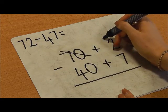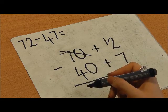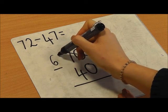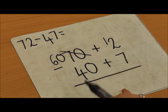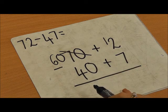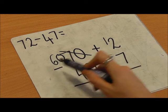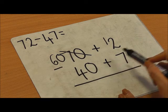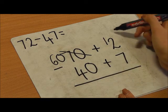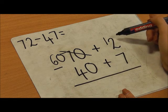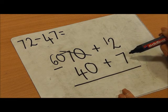10 for me. 10 less than 70 is 60. So now my calculation reads 60 add 12, take away 40 add 7. So now I'm going to go back to my taking away — 12 take away 7.